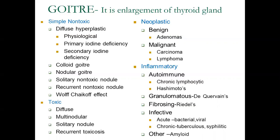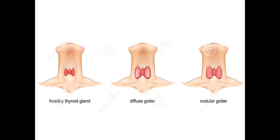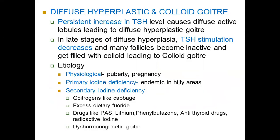We will now go into simple non-toxic goiter, discussing diffuse hyperplastic goiter, colloid goiter, and nodular goiter. A pictorial shows the difference between the three types: the healthy thyroid gland is butterfly-shaped with two lobes and an isthmus; diffuse goiter shows enlargement of the entire gland; nodular goiter shows mild enlargement of the entire gland with nodules all over the surface. Importantly, diffuse hyperplastic goiter, colloid goiter, and nodular goiter are different phases of the same goiter — if left alone for several years, a goiter will progress through all three types.